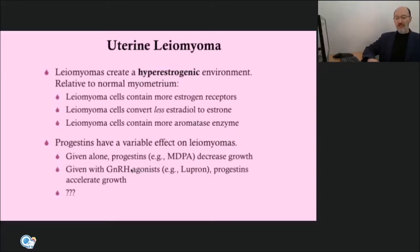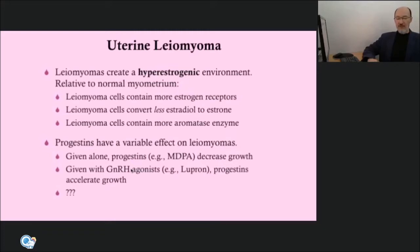Moreover, in women treated with gonadotropin-releasing hormone agonists, leiomyomas typically decrease in size. However, if progestogens are given simultaneously with gonadotropin-releasing hormone agonists, there is typically increased leiomyoma growth. But given alone, progesterone decreases growth.